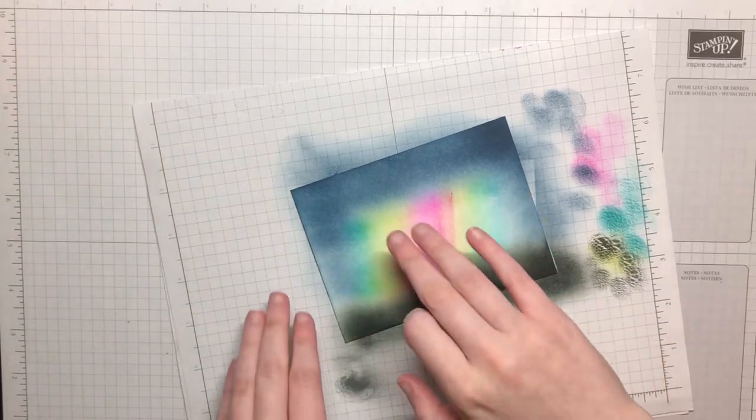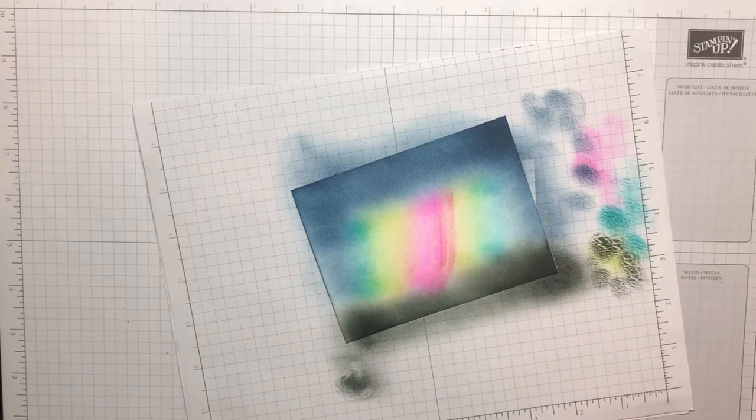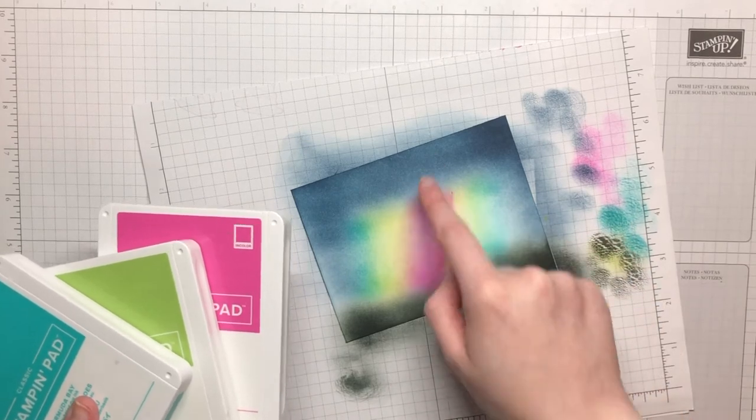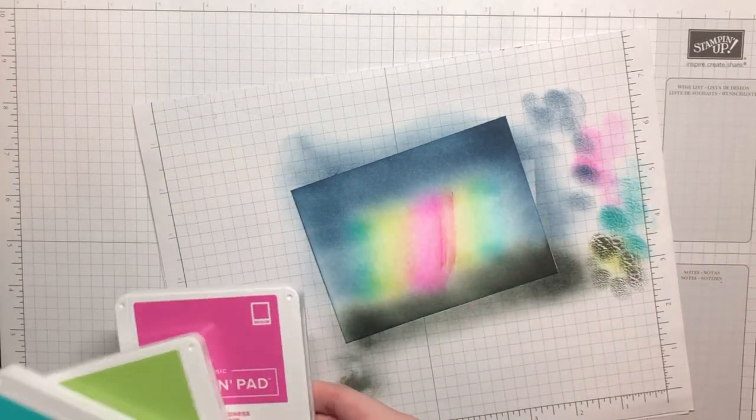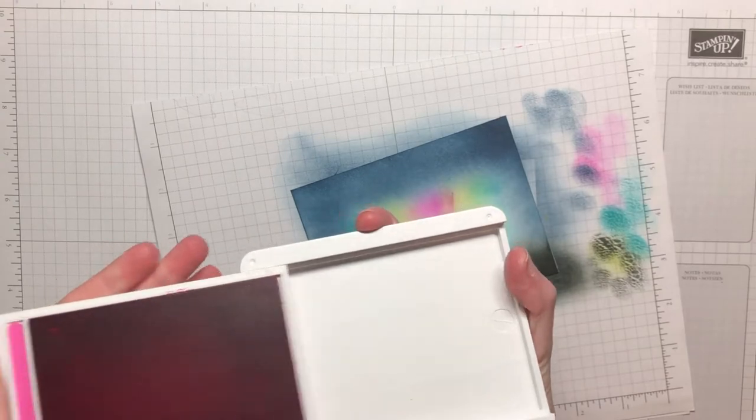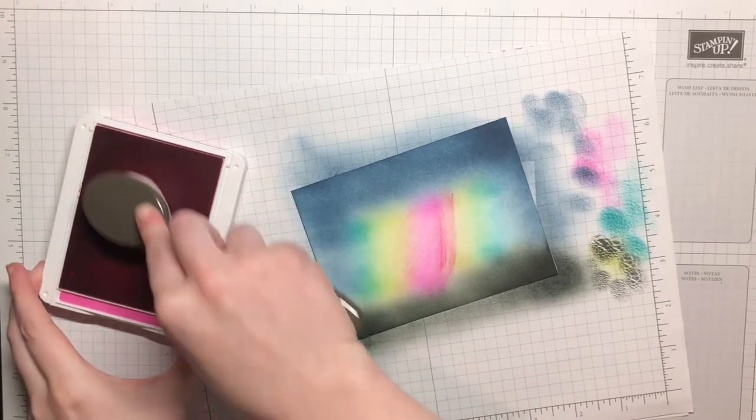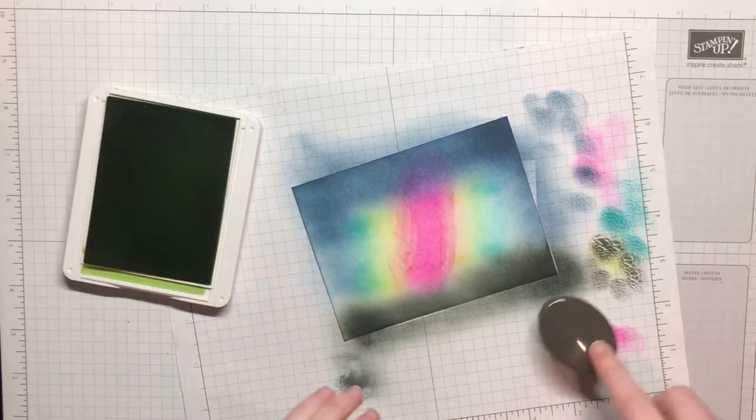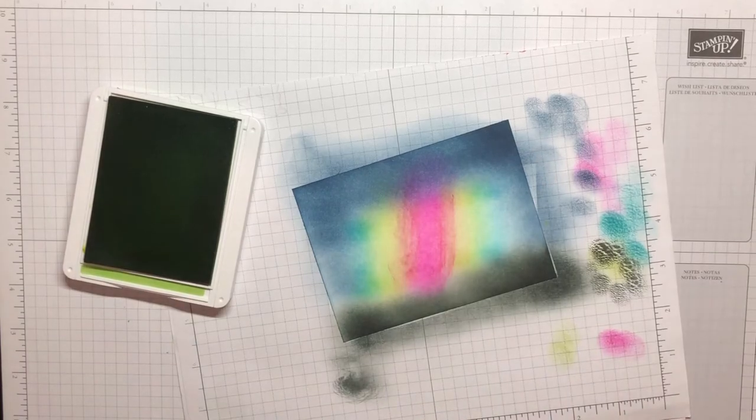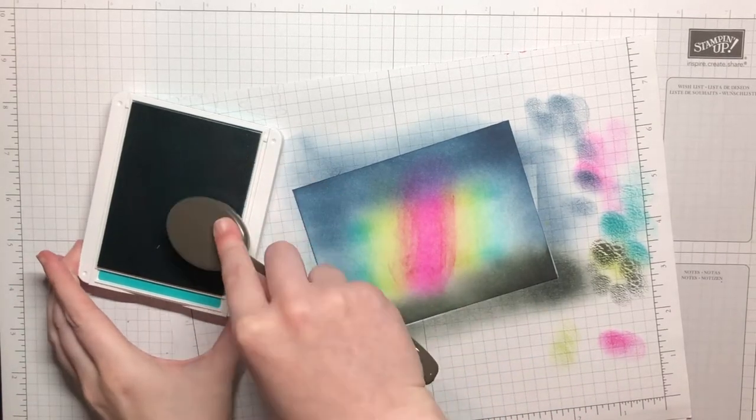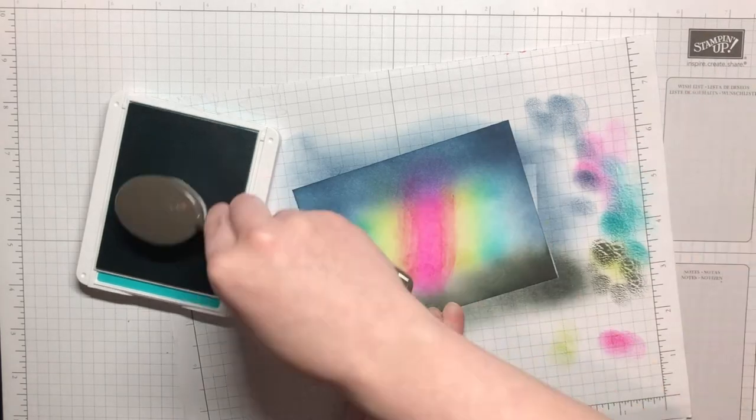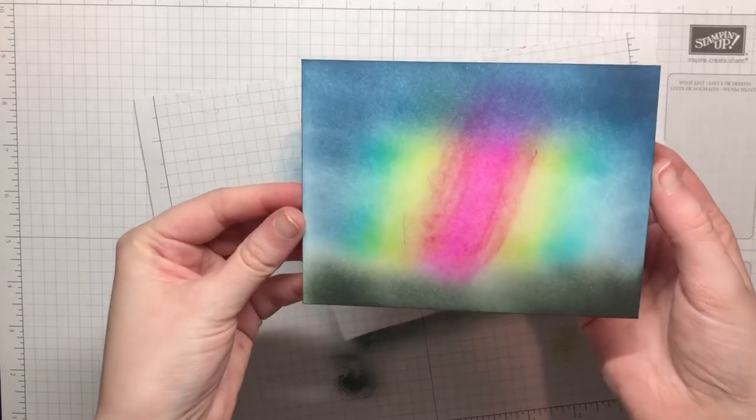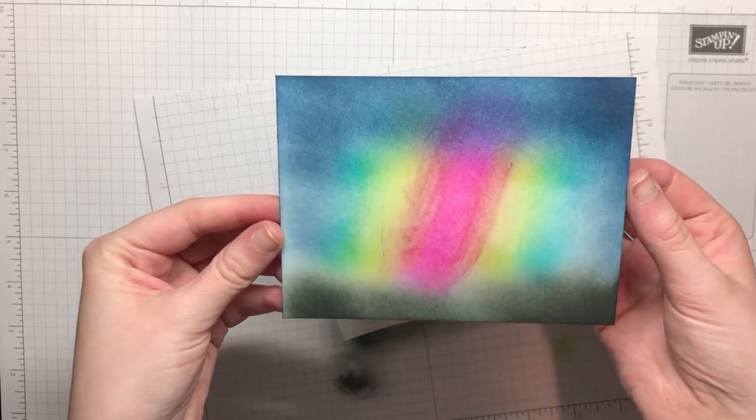Isn't that such a fun technique? Now because it's kind of like a straight line across here I am going to bring in a few of my colors and I'm just going to use my blending brushes again to kind of try to pull some of that color up more just so it doesn't look like a straight line across. And isn't that so fun? That turned out so beautiful. It is such a fun technique.